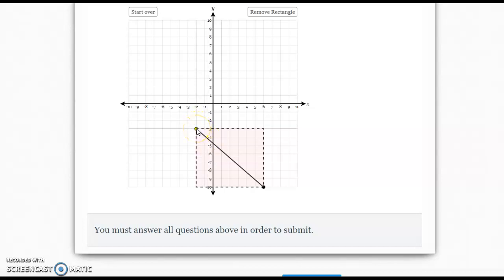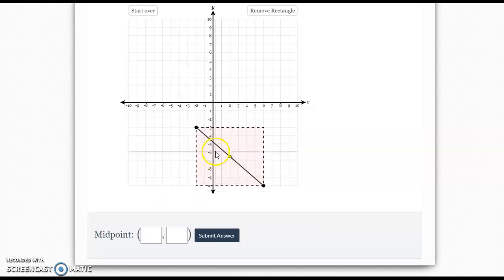Now let's look at the length of this side right here. From negative 2 to positive 6, the measure of this rectangle is 8. So half of 8 is going to be positive 2. So what's our midpoint? Right there. Our x is positive 2, and our y is -6.5.